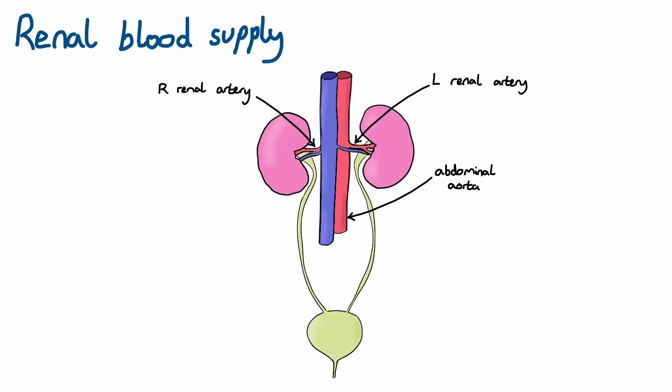Each renal artery enters the kidney at the renal hilum, which is essentially the access point to the kidney at its medial edge.